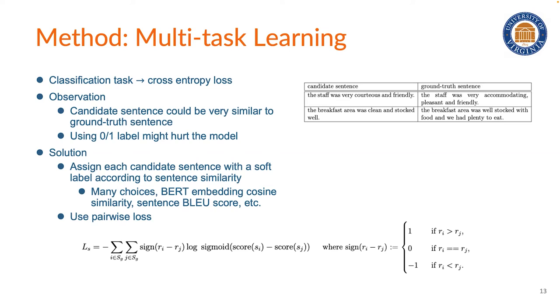If you take a look at the table here, the candidate sentence in the first line is saying that the staff is very courteous and friendly, while the ground-truth sentence says that the staff is very accommodating, pleasant, and friendly. This pair of sentences have nearly the same meaning. So therefore, we believe that simply using zero and one label might hurt the model.